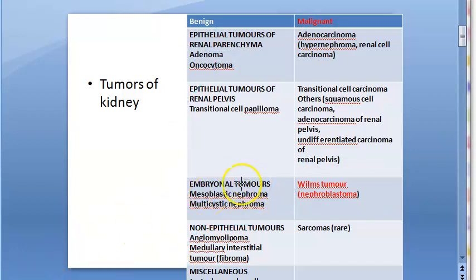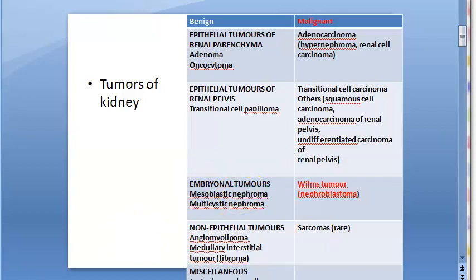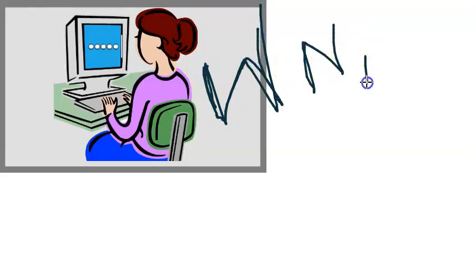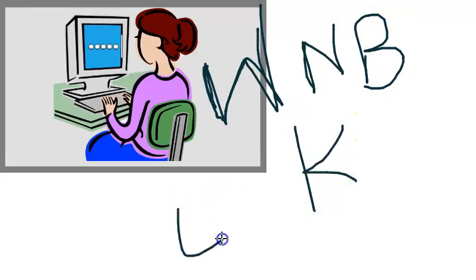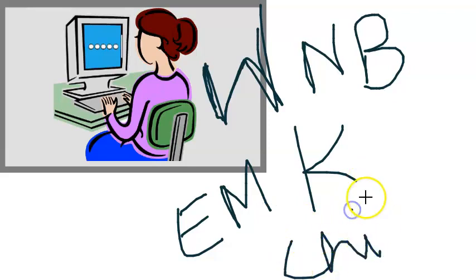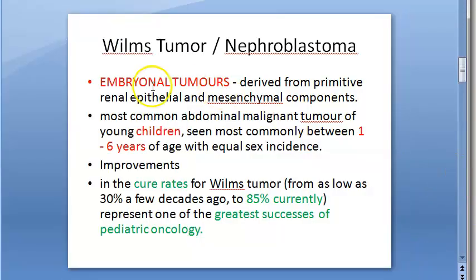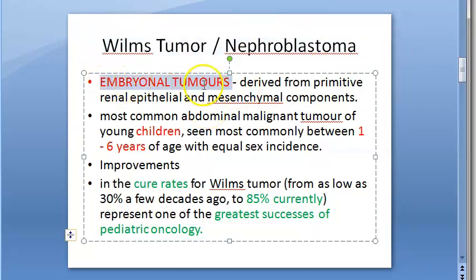As it is an embryonal tumor, you can expect very young children to get it. Wilms tumor is also called nephroblastoma — it's an embryonal malignant tumor of the kidney affecting children. The tumor is derived from primitive renal epithelium and mesenchymal components; that's why it's called an embryonal tumor. Peak incidence is in children aged one to six years. The good news is the cure rates are very high — 85% currently. It represents one of the greatest successes of pediatric oncology.